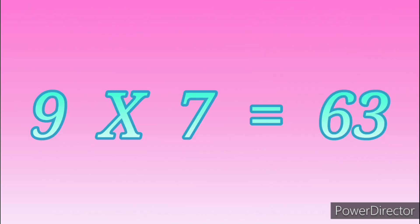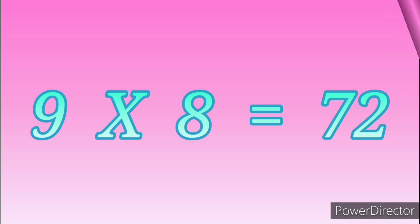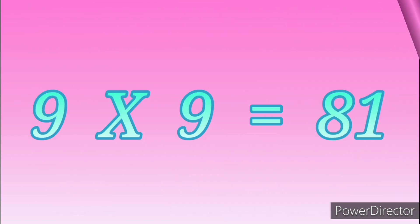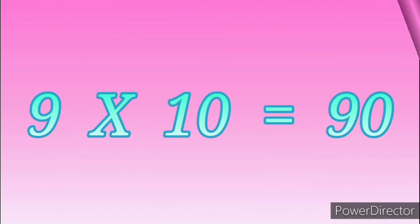9 sevens are 63. 9 eights are 72. 9 nines are 81. 9 tens are 90.